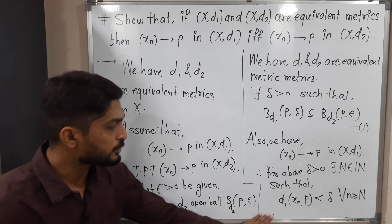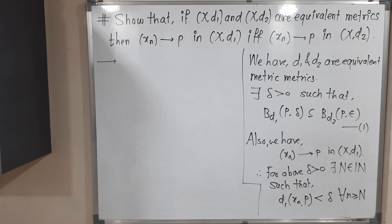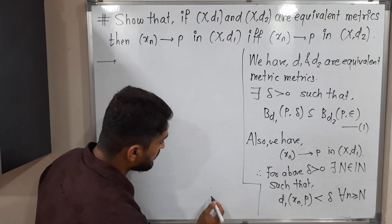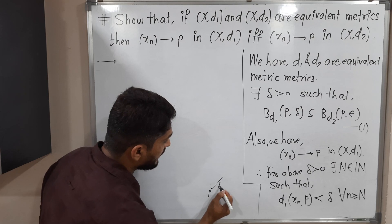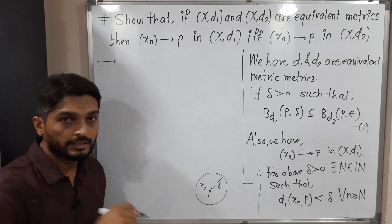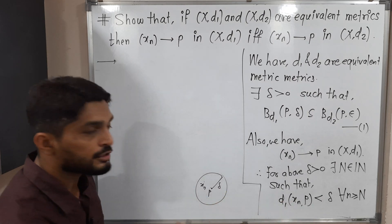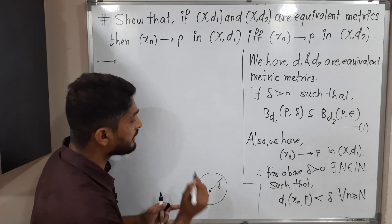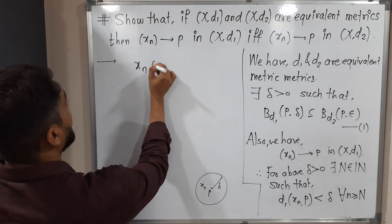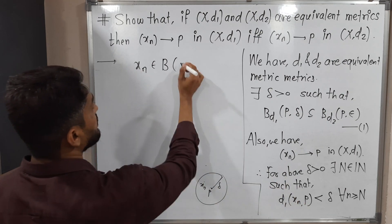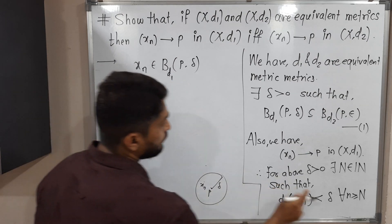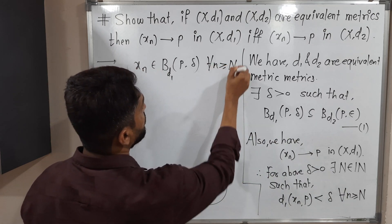We have obtained that the distance between xn and P is less than delta. That means if you consider a ball with center P and radius delta, since distance between xn and P is less than the radius delta, xn will lie inside the ball. If the distance is less than the radius, the point lies inside the ball. So xn belongs to the D1 open ball with center P and radius delta for all n greater than or equal to N. Let us call this statement (2).